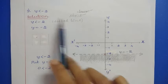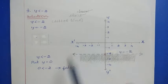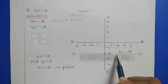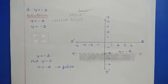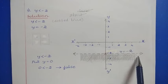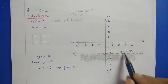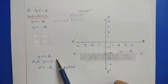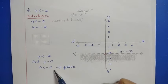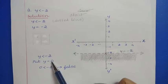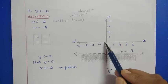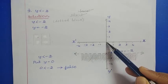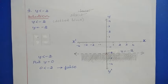Since y < -2 is a strict inequality, we use a dotted line parallel to the x-axis. To find the shaded area, put y = 0 into y < -2: we get 0 < -2, which is false. Since the origin gives a false result, we shade the area away from the origin — below the dotted line.